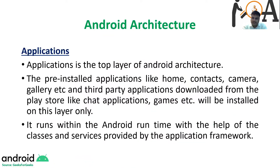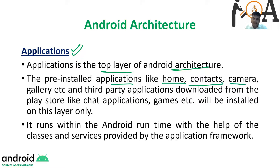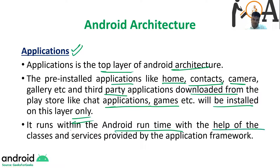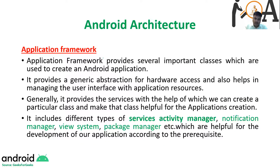Now let's understand each layer one by one, starting from the topmost layer — the Application layer. The Application layer is the top layer of the Android architecture. Pre-installed applications like Home, Contacts, Camera, Gallery, etc., and third-party applications downloaded from the Play Store like chat applications and games will be installed on this layer. It runs within the Android Runtime with the help of classes and services provided by the Application Framework.